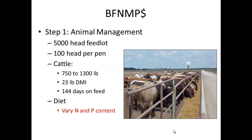I'd like to step through several scenarios using this program and show how changing different things can impact the nutrients in the manure. For the first scenario, the animal management module uses a 5,000-head feedlot with 100 head of cattle per pen. Those cattle come in at 750 pounds and exit at 1,300 pounds. They're given 23 pounds of dry matter intake per day and are on feed for 144 days. All of these inputs can be changed to match your specific operation.